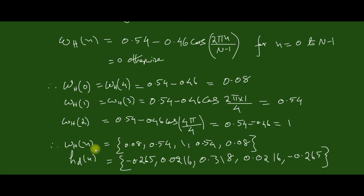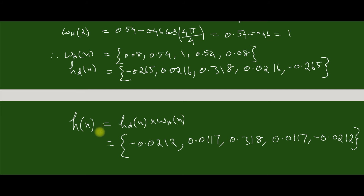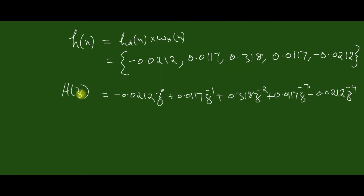Now h(n) can be obtained by element-wise multiplication of the two sequences. By multiplying, we get h(n) as the final sequence. From the impulse response we can obtain the system function H(z) in this form.